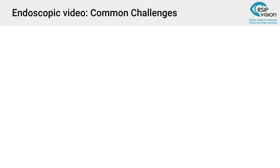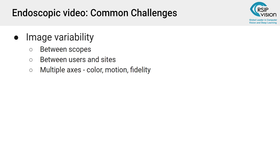Before I get into case studies, I'd like to talk about the challenges we're seeing in endoscopic video. The first challenge is image variability. In some cases, the system needs to support more than one type of camera or scope. We may need to work with data collected from a variety of sites that can look very different because of hardware and user behavior. Image variability spans multiple axes — strong variability in colors, motion, and video fidelity. These challenges are more common in the endoscopic domain compared to radiology, CT scanners, or X-ray.